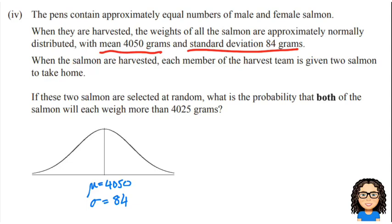When the salmon are harvested, each member is given two salmon to take home. So as soon as I see this, this is an idea I've seen before in previous exams, and I want you guys to learn to recognize finding two events. So that's talking about person number one is getting a salmon and person number two is getting a salmon. So remember, 'and' in probability terms means to multiply. Okay, so we're going to come back to that idea.